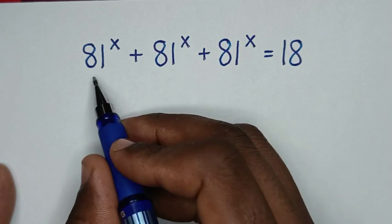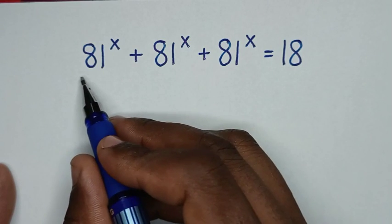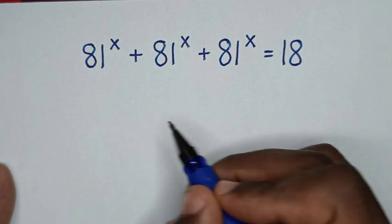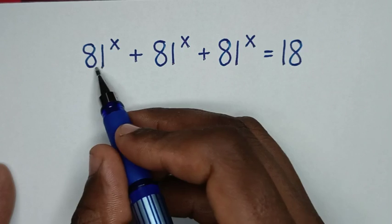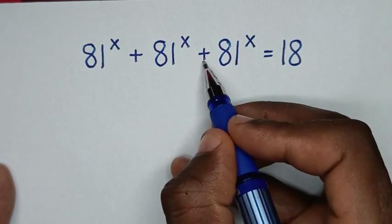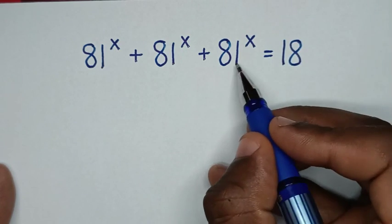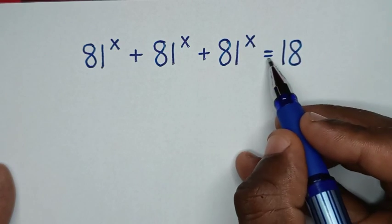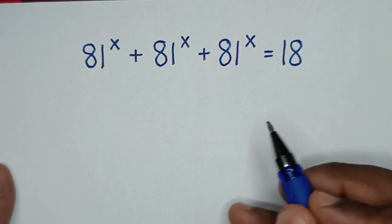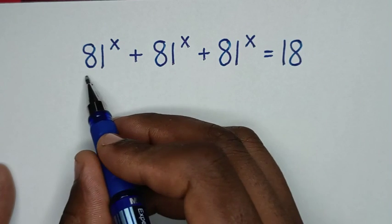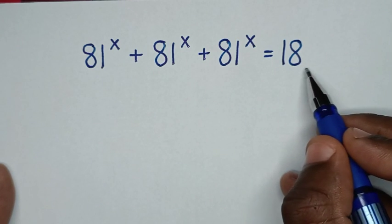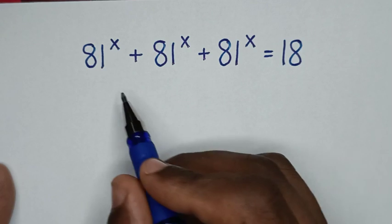Hello, you are welcome to solve this math problem, which is 81 power of x plus 81 power of x plus 81 power of x is equal to 18. We need to find the value of x from this equation.